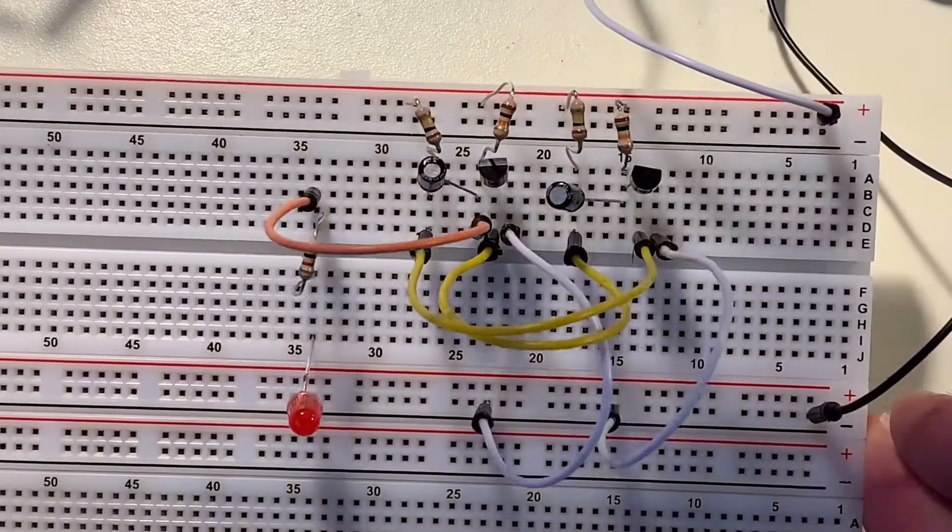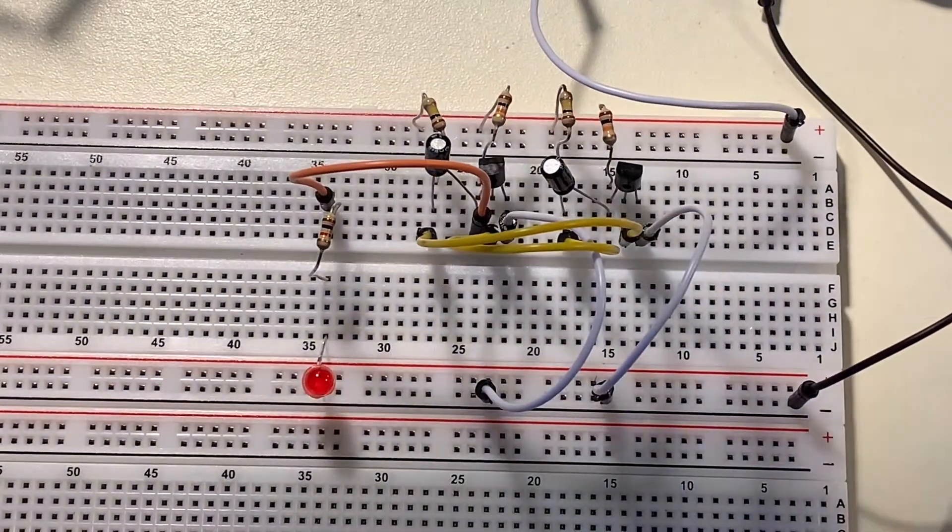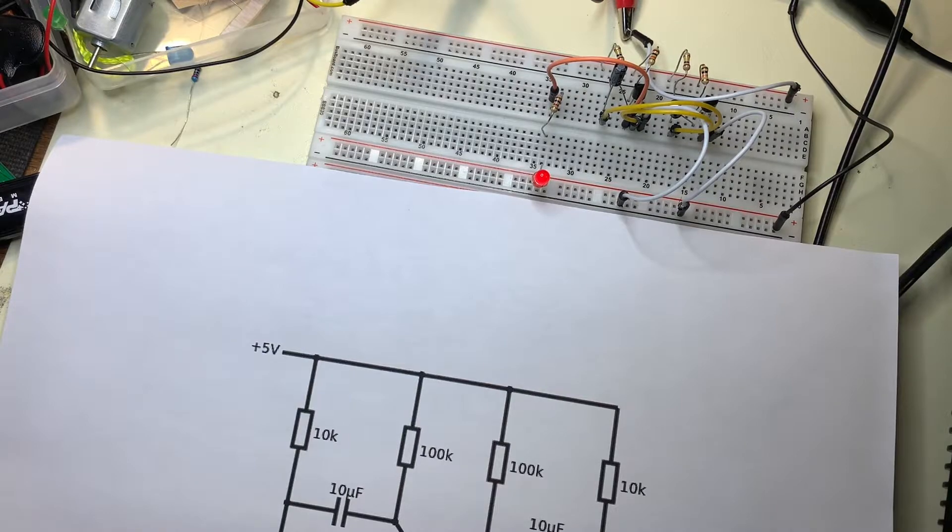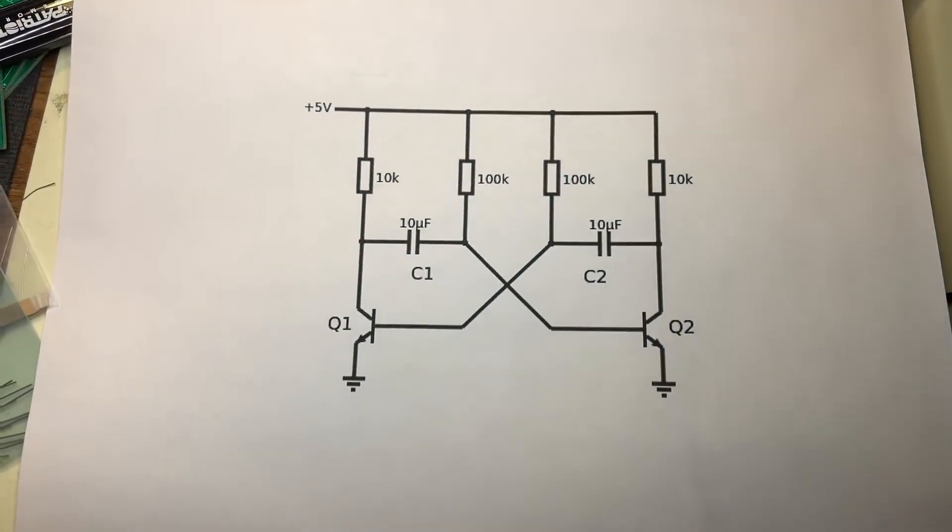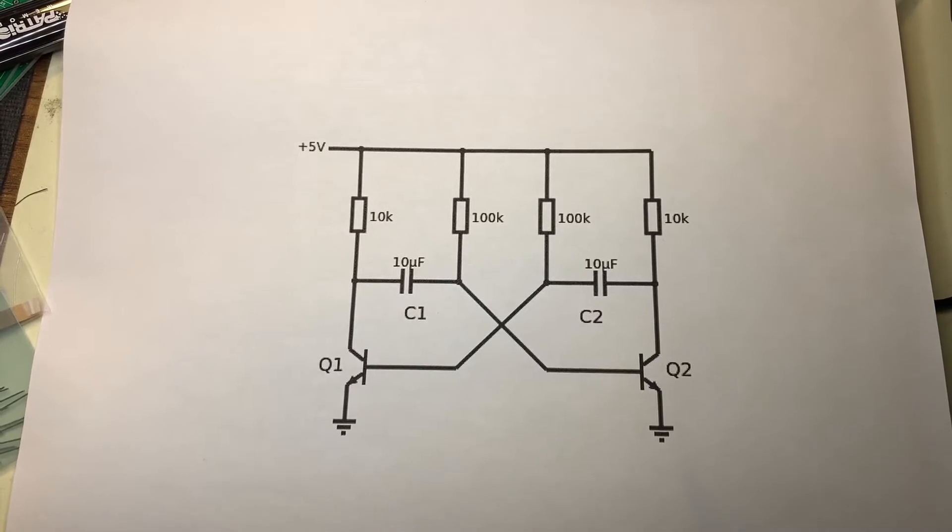That's being done entirely through the capacitors, the transistors, and those four resistors up there. So right down here is the schematic for the circuit, and fortunately it's more simple than it looks.